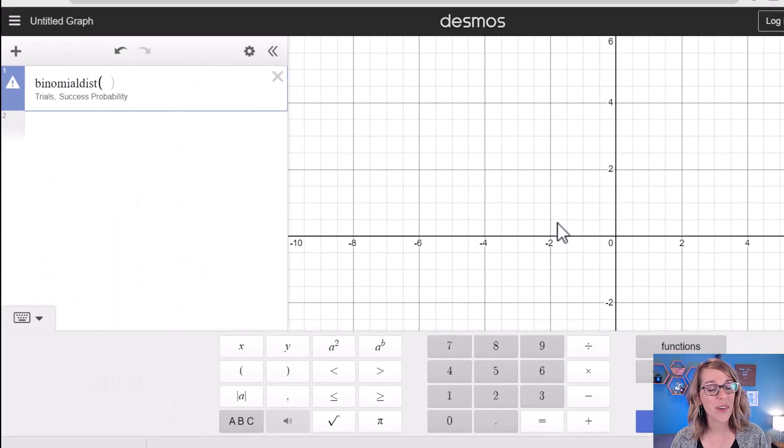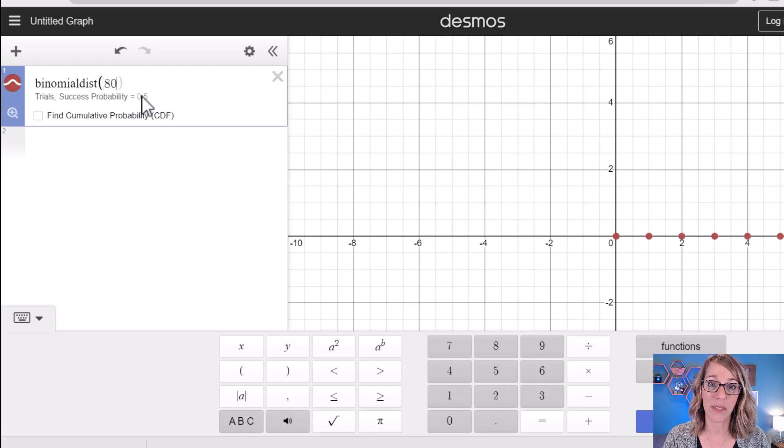Now if you remember what it's called, you can just type it in. But notice how it prompts me after the parenthesis for the number of trials and the success probability. The number of trials is n, and for our experiment that was 80. And then it wants a comma, and then it wants the success probability. So that's the probability of getting tails in one spin, and that's 0.5 or one half.